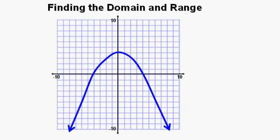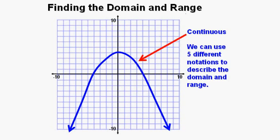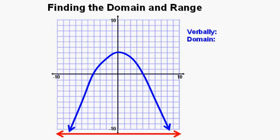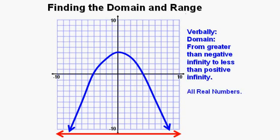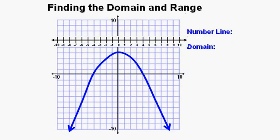Now let's look at this relation. Since we don't see points on the graph, the relation is not discrete but rather continuous, because it continues unbroken no matter where we go on the graph from left to right. We can use five different types of notation to describe the domain and range. Verbally, we can see the end behavior going from negative infinity to positive infinity, so the domain goes from greater than negative infinity to less than infinity — also called all real numbers. We can show this on a number line overlaying the graph, with arrows pointing to negative infinity on the left and positive infinity to the right.